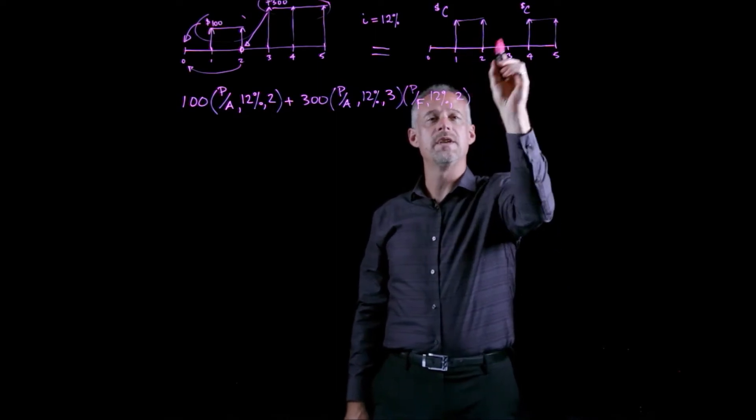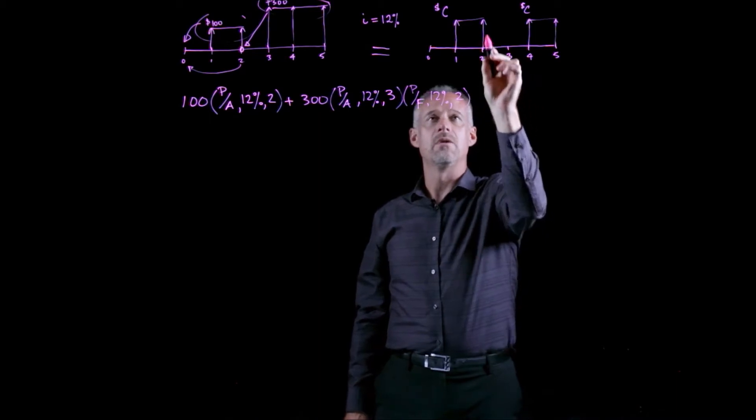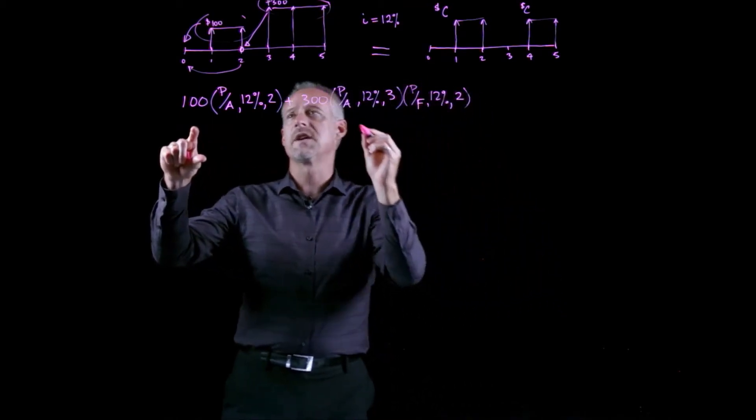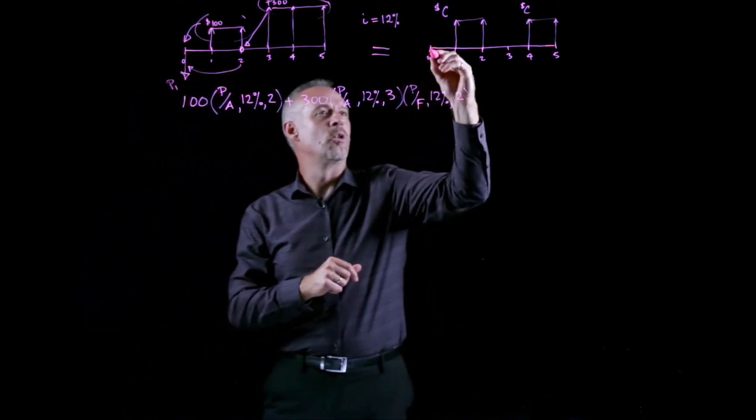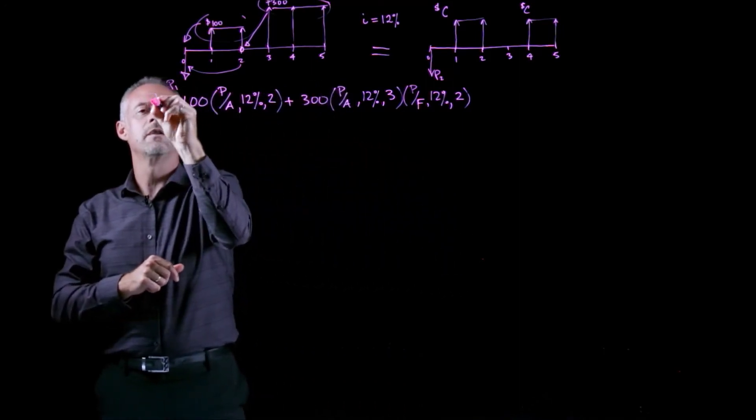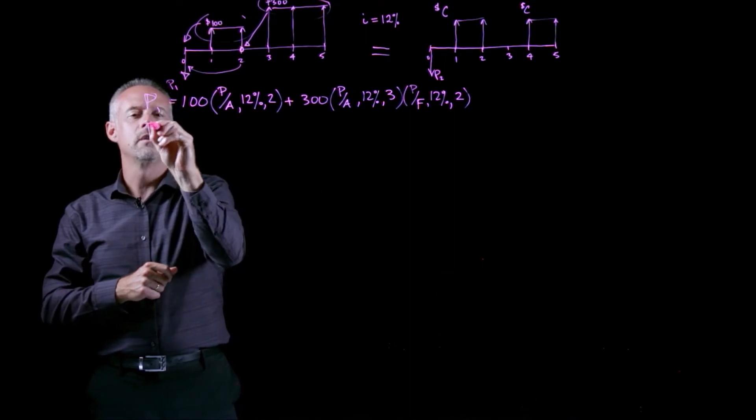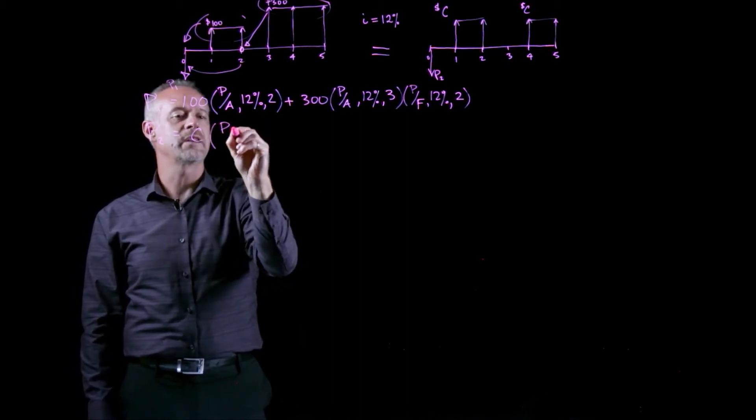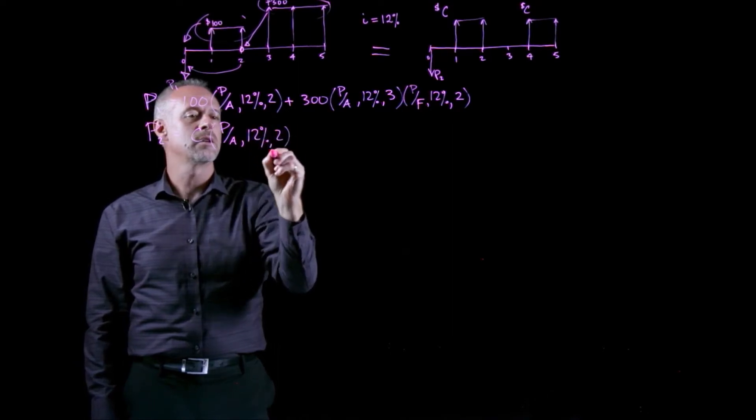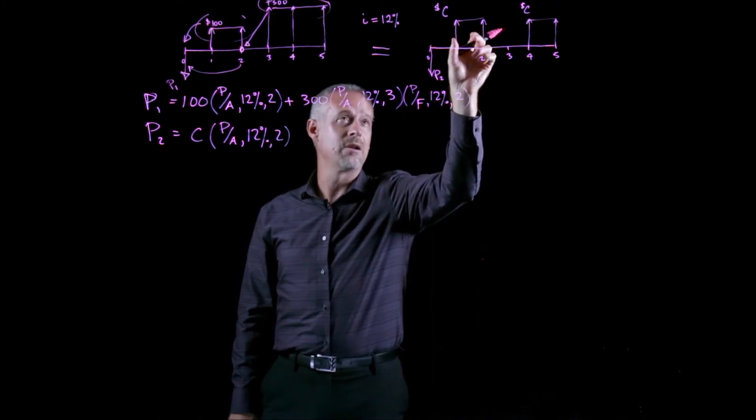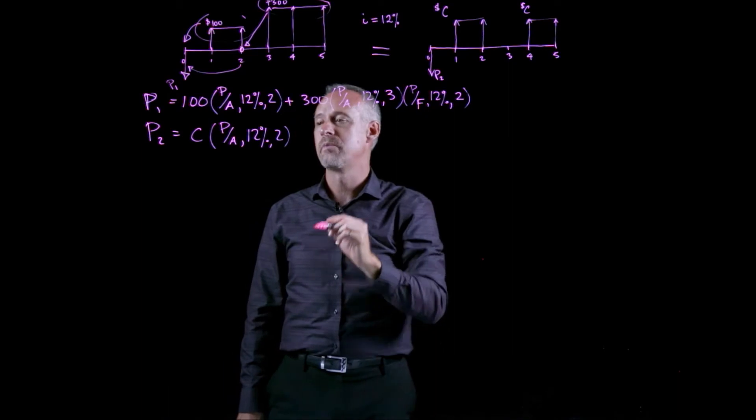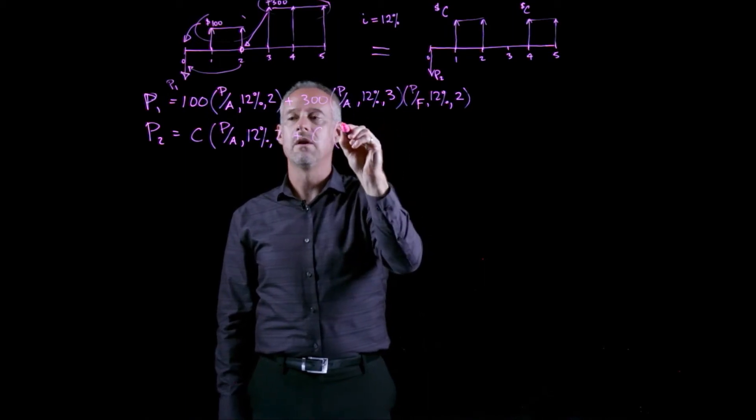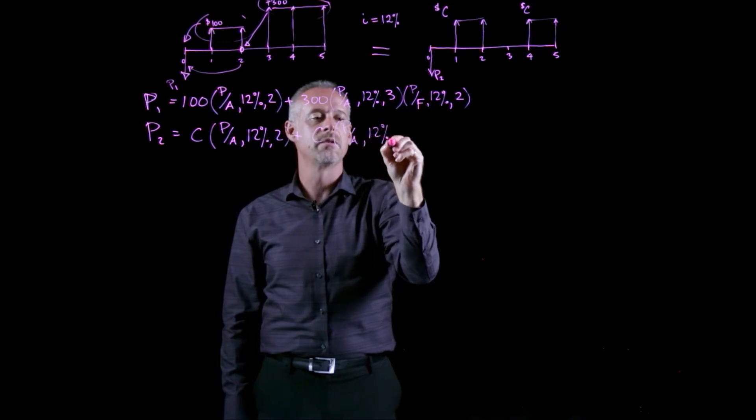Now, similarly, if I look at these cash flows, and I set the value equal to this value at time t equal to zero, I'll do it underneath. Let's say that this is going to be P1, and we'll call this P2. So we'll say that this expression is the value of P1, and P2 will be our unknown value of C times, in fact, it's the same factor, where I've got two repeating payments. I'm going to assume that they're an A, bring them back to P using the P given A factor,